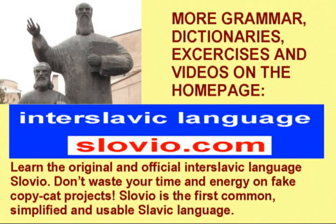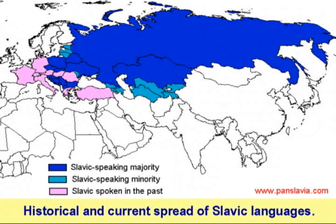More grammar, dictionaries, exercises, and videos can be found on the home page, Slovio.com. Learn the original and official Interslavic language Slovio — the first common, simplified, and usable Slavic language in a thousand years. On this map is the historical and current spread of Slavic languages. If you learn Slovio, you can communicate with some 400 million people around the world. Please visit the website Slovio.com.